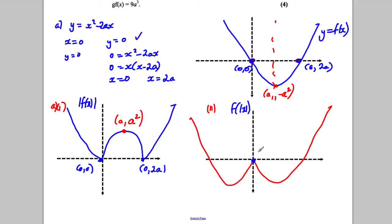So this point here would still be (0,0). This point here would still be (2a,0). This point here, therefore, would be... sorry, not (0,2a).